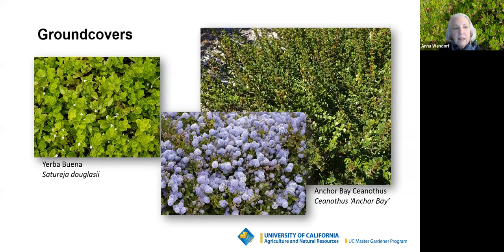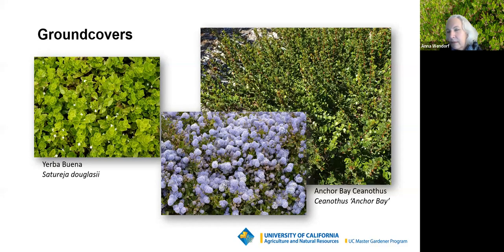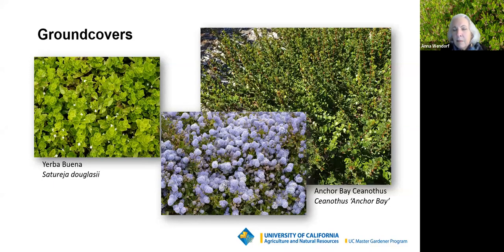For ground covers, yerba buena is native to our area — a super easy, very low-growing plant a couple of inches tall. It sends out runners gradually, so it's not a super dense ground cover, but in part shade it provides a little cover under other plants. And yes, you can make tea out of it. There are also several varieties of low-growing ceanothus — most need a little shade inland since they're native to coastal areas, though Anchor Bay is one variety I've had good luck with even in inland areas in full sun.